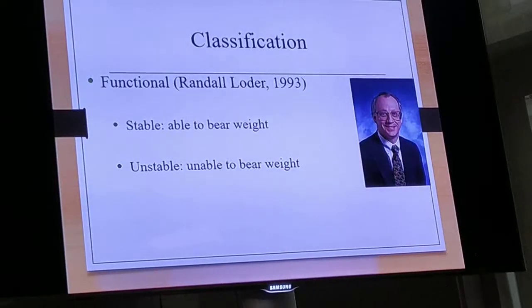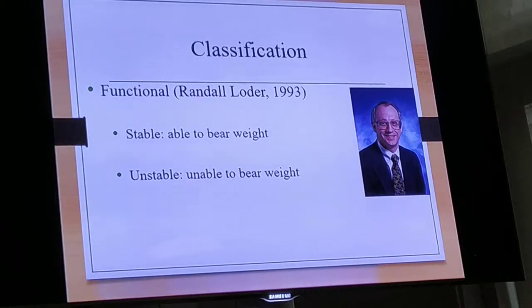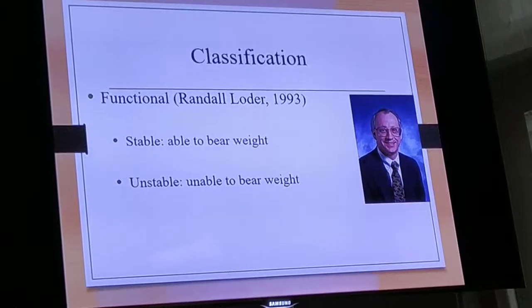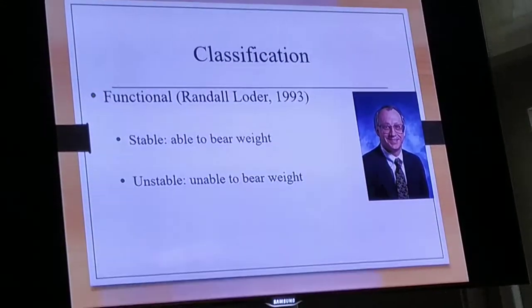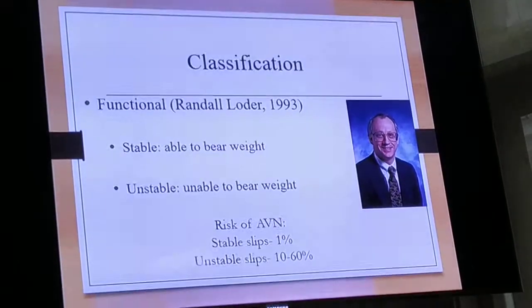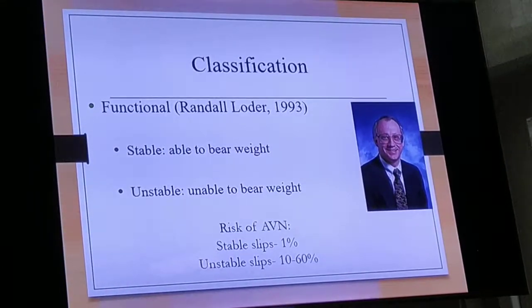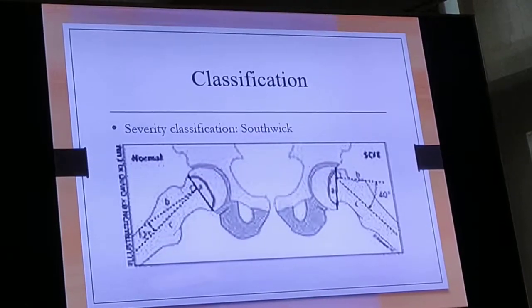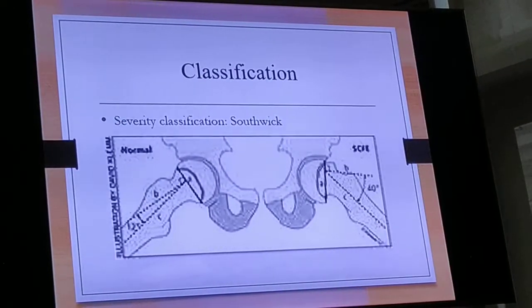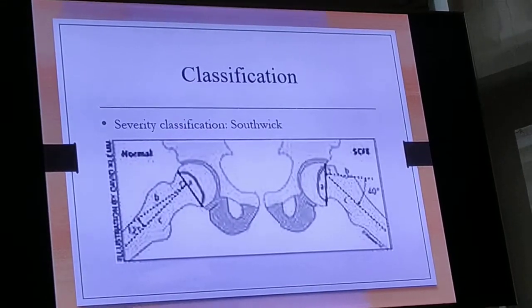What does predict the risk of AVN is the functional classification given by Dr. Randall Roder. It is either stable — where the child is able to bear weight with or without support — or unstable, where he is unable to bear weight. In stable slips the risk of AVN is only about 1%, while in unstable slips the risk is almost 50 to 60%. The next is a severity classification described by Southwick: a slip angle less than 30 degrees is mild, 30 to 60 degrees is moderate, and more than 60 degrees is severe.